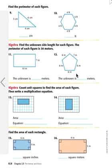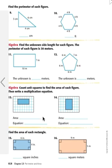Now this one's a little bit easier because these are all the same length. So this one is 6 and 6 and 6. What is this going to be? You're right, 6 meters.